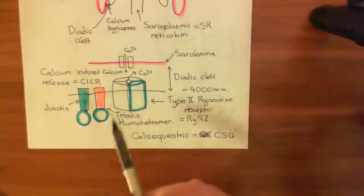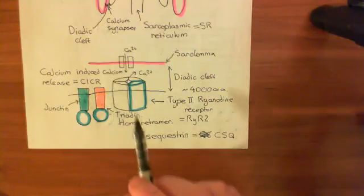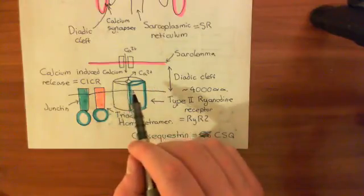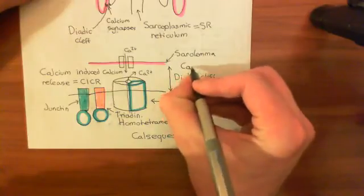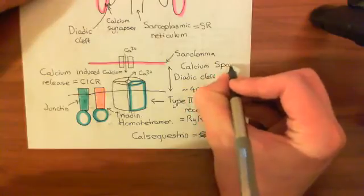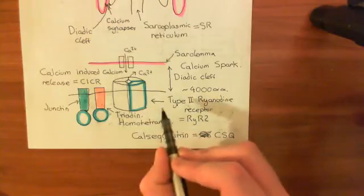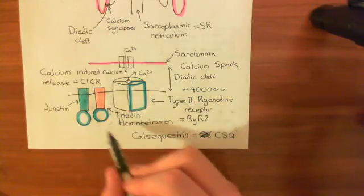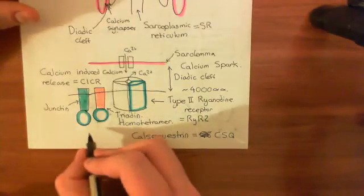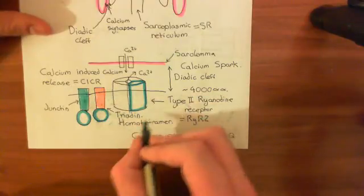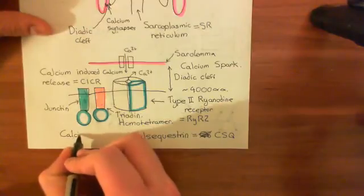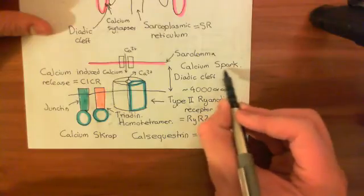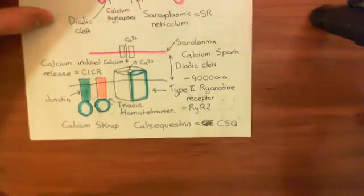When the type 2 ryanodine receptor opens, you get calcium released from the sarcoplasmic reticulum into the cytoplasm. This new calcium signal coming out of the type 2 ryanodine receptors is known as a calcium spark — the rising calcium around the type 2 ryanodine receptor. The reduction in calcium on the sarcoplasmic reticulum luminal side is called a calcium scrap — basically 'spark' spelled almost backwards: take the 'park' bit and reverse it to get 'scrap'.